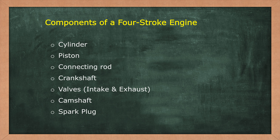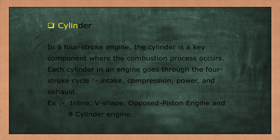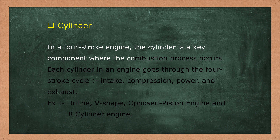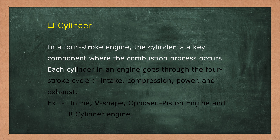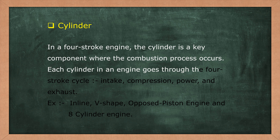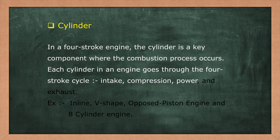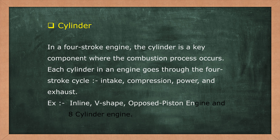Now we will see brief information about these components. Cylinder is a key component where the combustion process occurs. Each cylinder in an engine goes through the 4-stroke cycles: intake, compression stroke, power stroke, and exhaust. There are some types of engines according to the design of cylinder: inline engine, V-shaped engine, opposed piston engine, and 8-cylinder engine.